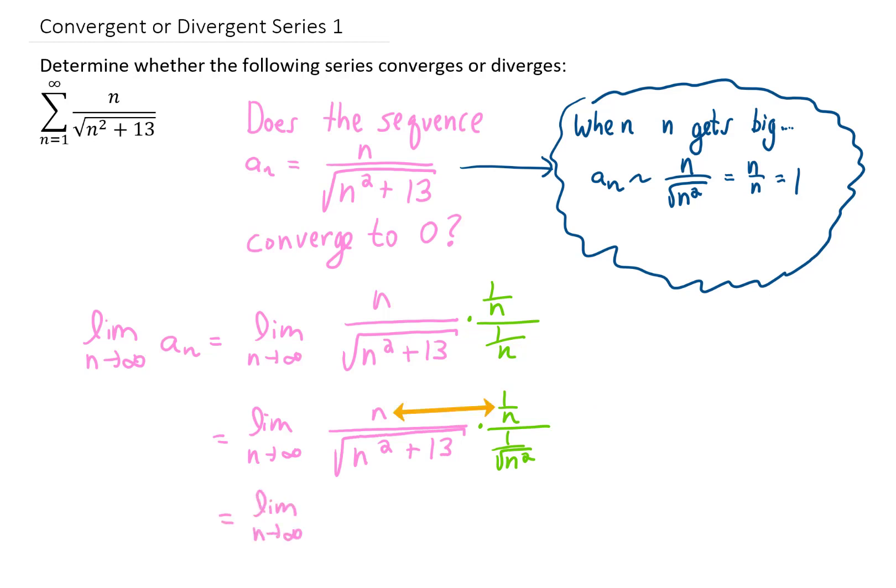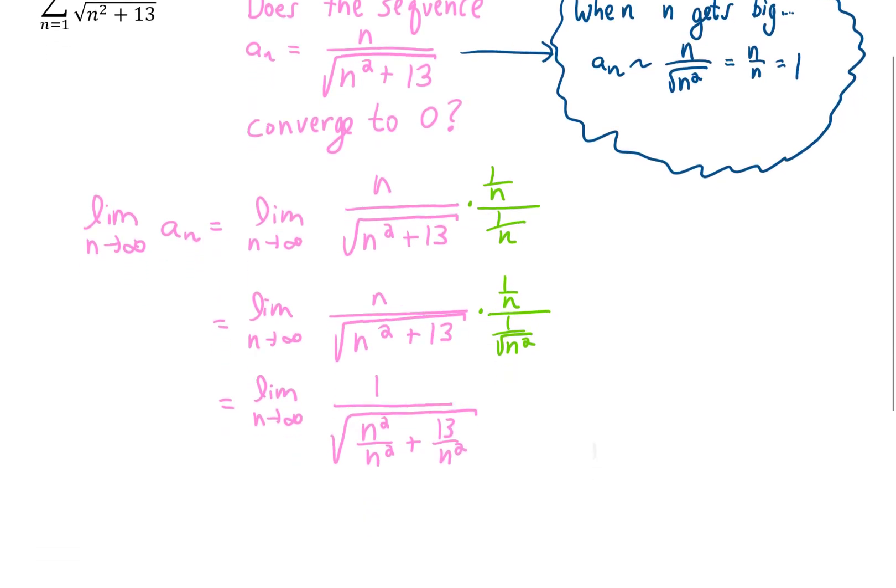At this point we can look at the numerator, combine the n times the one over n and just get one. In the denominator, we can bring this n squared, which is underneath the square root, inside this bigger square root, and distributing that n squared looks just like this. Now just one more step of simplification.